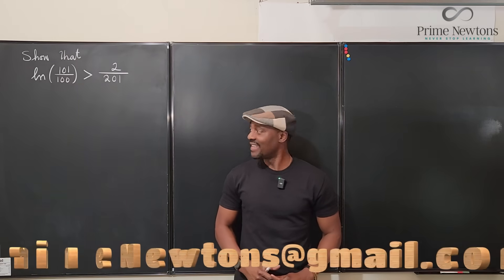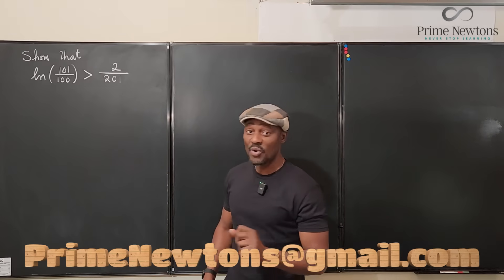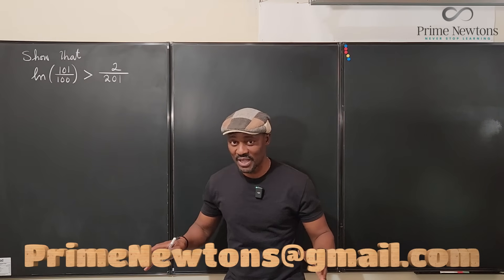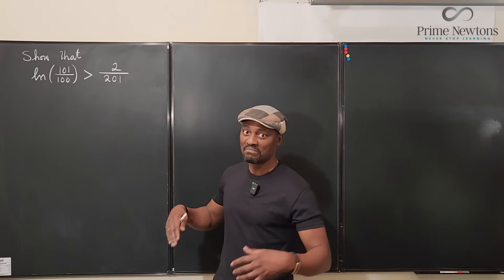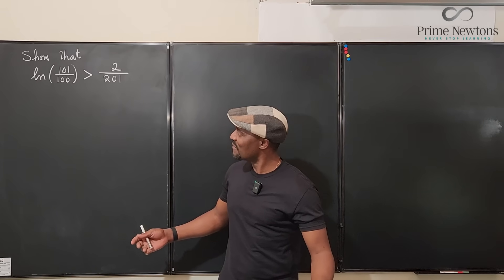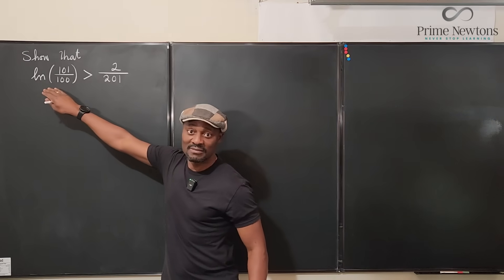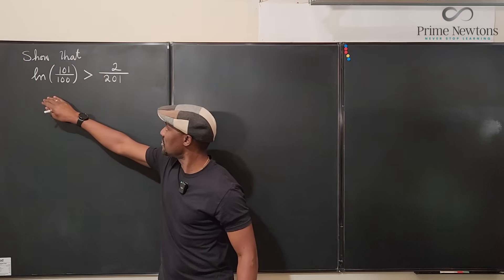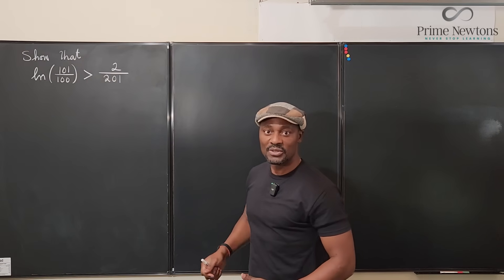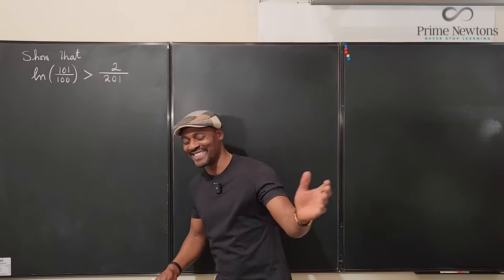Welcome to another video. We want to show that the natural log of 101 over 100 is greater than 2 over 201. No approximations allowed, no calculations using a calculator — we just want to do some calculus. We have to use the power series for the natural log function and maybe for the other expression. But before we start, we have to know what manipulations are required. Let's get into the video.